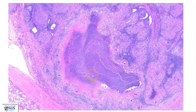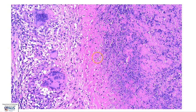Here is an area of necrosis that is surrounded by granulomas. This is a high magnification view of the necrotic area with pink eosinophilic amorphous material and lots of karyorrhectic material. We have some multi-nucleated giant cells and viable epithelioid histiocytes surrounding the necrotic area.